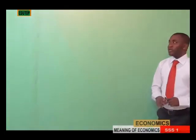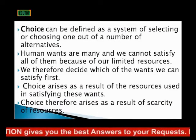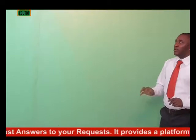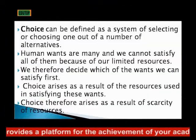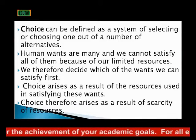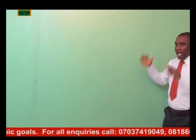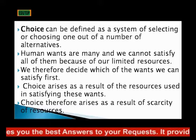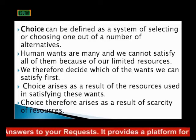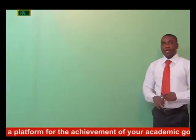The next basic concept is choice. Choice can be defined as a system of selecting or choosing one out of a number of alternatives. From that scale of preference, the student has been able to choose which item to go for first and which one next. Since wants are many and we cannot satisfy all of them because resources are limited, someone needs to decide which wants should be satisfied first. Choice arises as a result of the scarcity of resources.